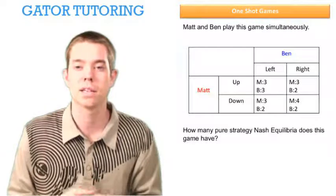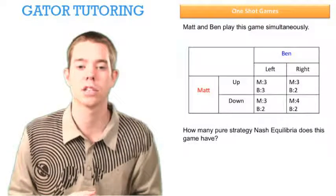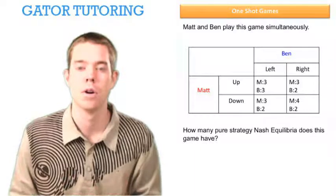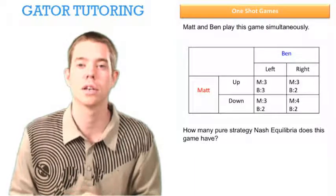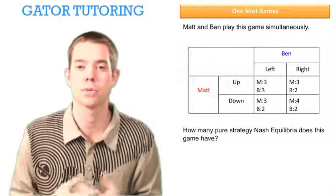Matt and Ben play this game simultaneously, and the question asks how many pure strategy Nash equilibria does this game have. Well, a pure strategy Nash equilibria is where we have two stars in one box, or an intersection of best responses.